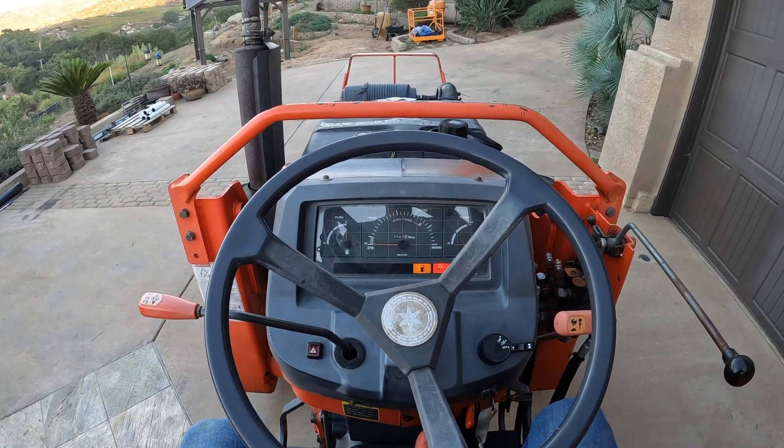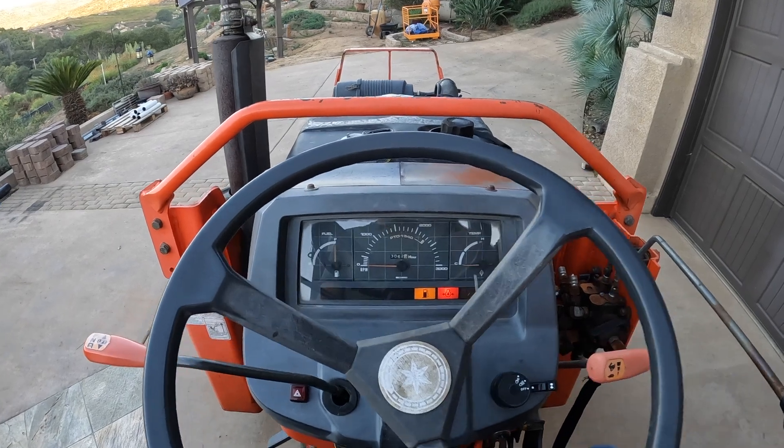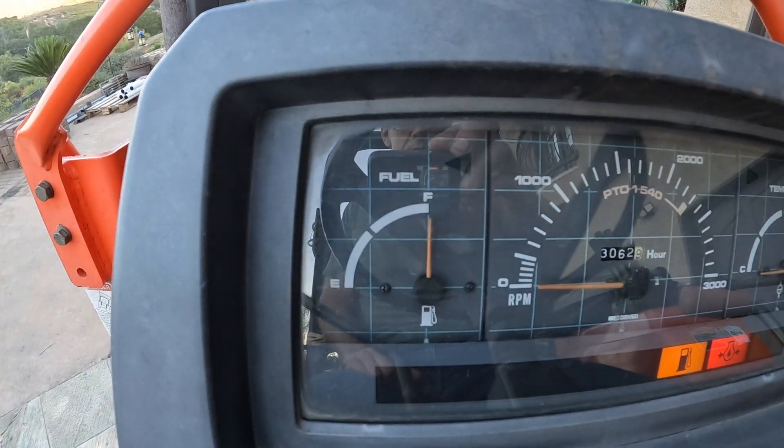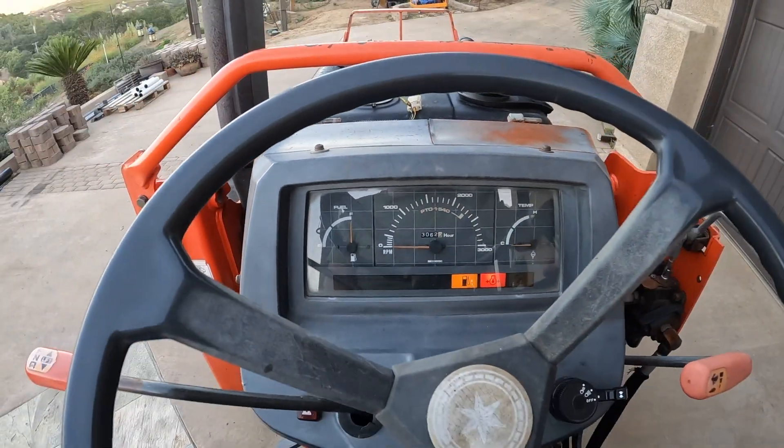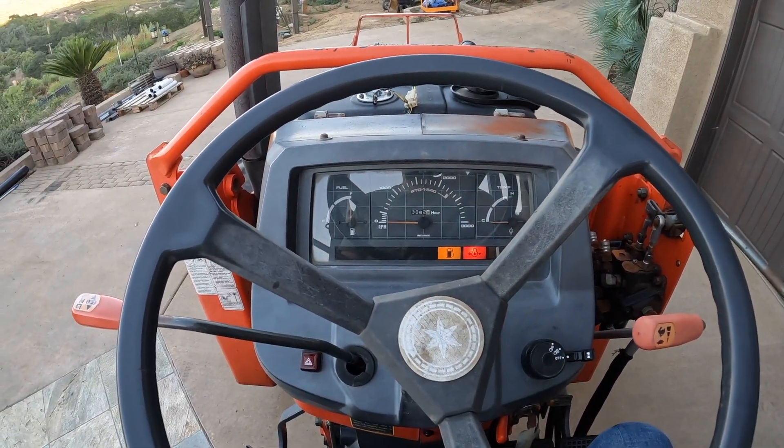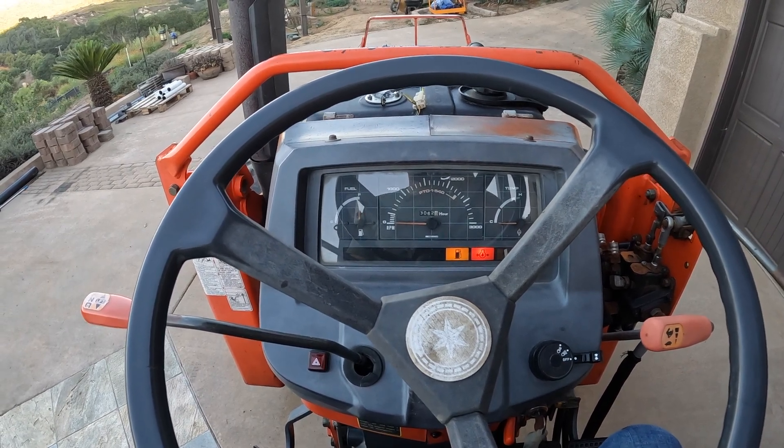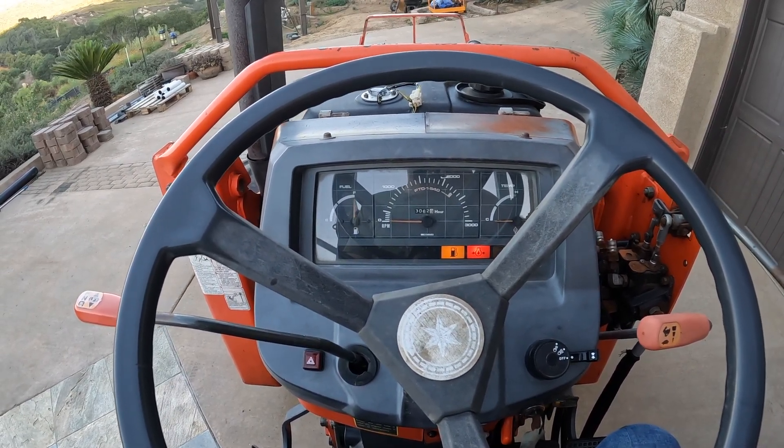Okay, I just ran the tractor for a bit and after running for a few minutes, the fuel gauge is now reading completely full. So that new sensor did fix the problem. Now, the fact that it's still taking a few minutes to adjust tells me that there might be a problem with the gauge itself, but that's okay. It's reading correctly. I can live with it being a little slow.